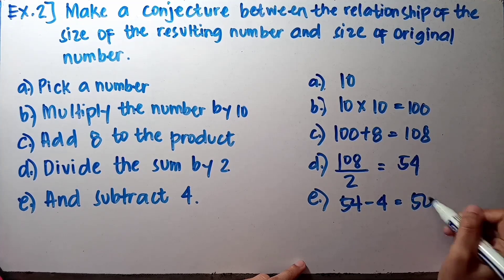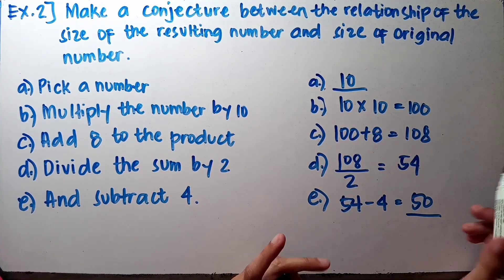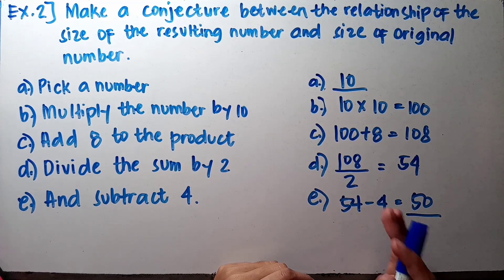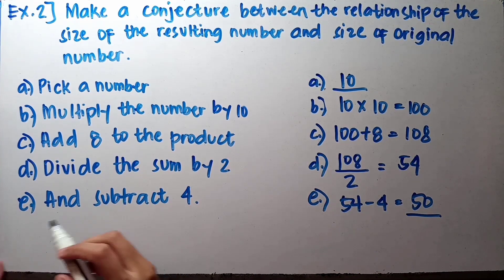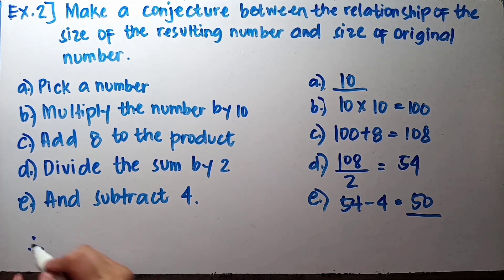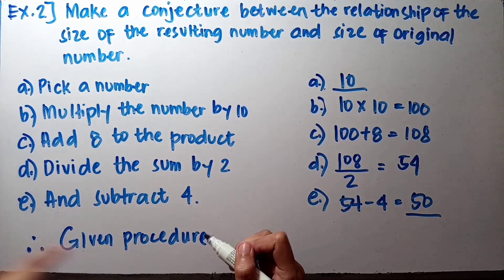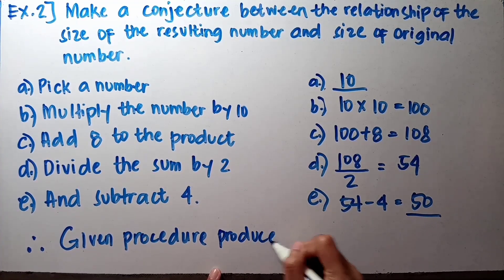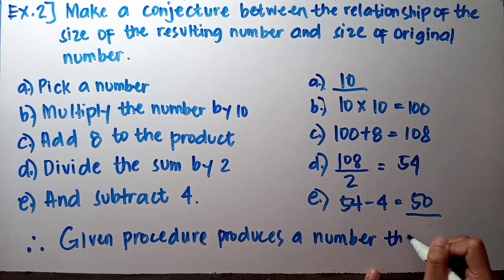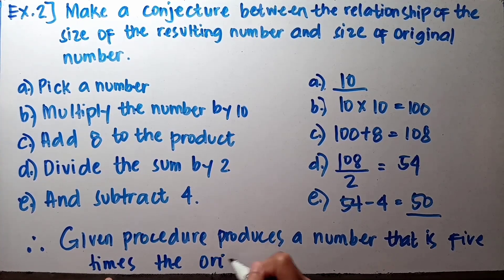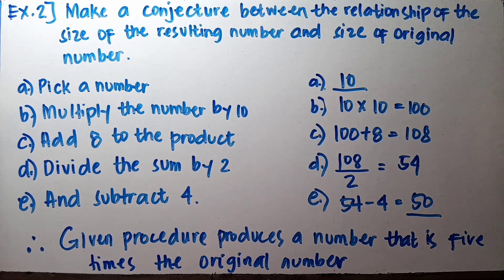From original number 10, we get resulting number 50 — which is also 5 times the original. So we can now conclude that the given procedure produces a number that is 5 times the original number. Therefore, our conjecture based on observations using number 5 and number 10 is: the given procedure produces a number that is 5 times the original number.